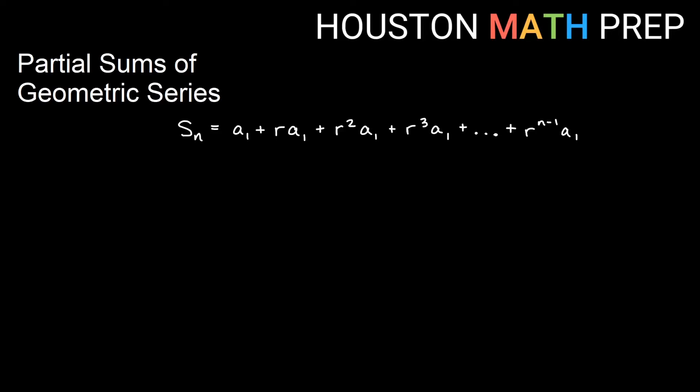So in our next line here to develop the formula, what we'll do is take the original line. We'll multiply everything by r, right? So my first term is going to be r times a_1 and then I'd get r squared times a_1. You get a very similar line to the first one. It's just that all the powers of r are one larger because you multiplied everything by r.